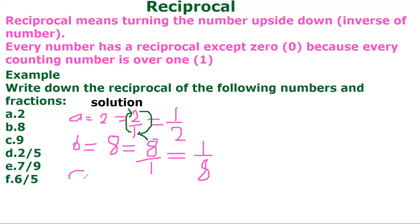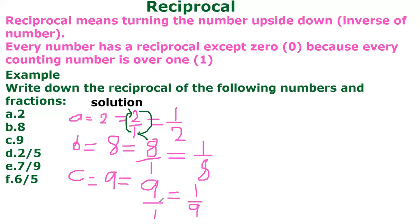Now C: we have nine. The reciprocal of nine. Nine is a whole number, this is not a fraction. So we have to write the fraction for a whole number — the denominator is one. So here is nine over one. Therefore, the reciprocal of nine over one is one over nine because we turn the number upside down. So the inverse of nine is one over nine.